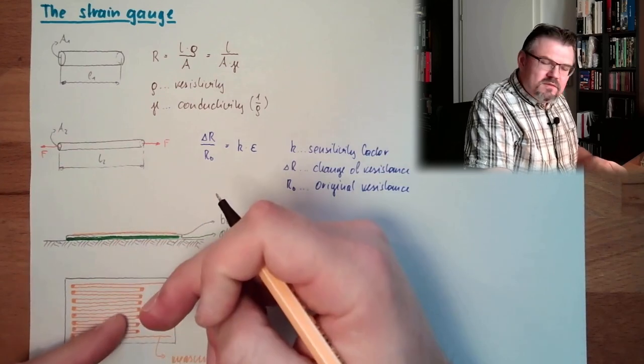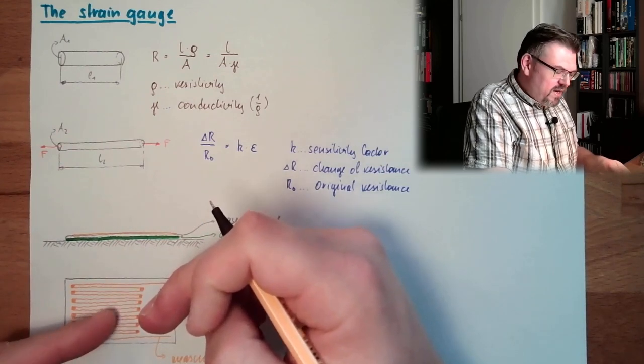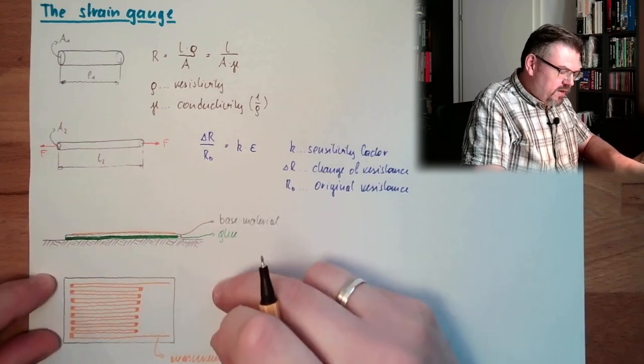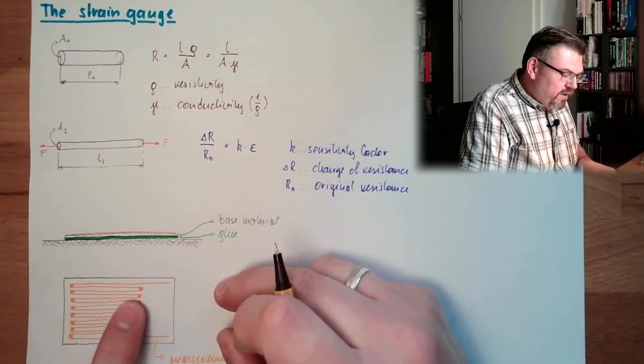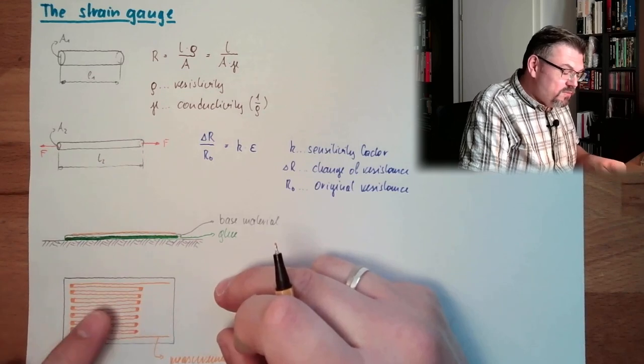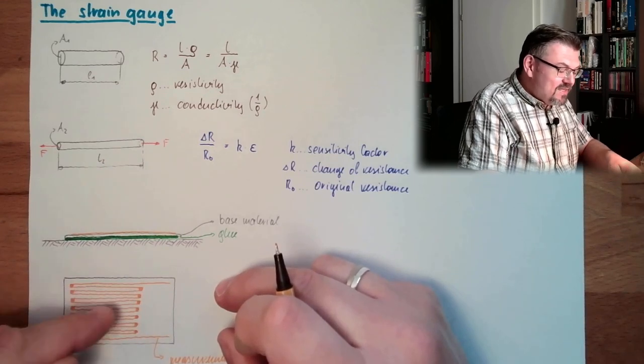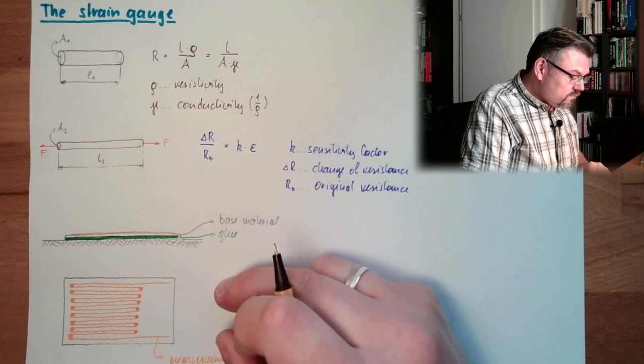So in this direction, this strain gauge will not measure anything. In this direction, the strain in this direction, this will be translated very good. Because there we have a lot of length on small room. This is because we made this zigzag pattern.